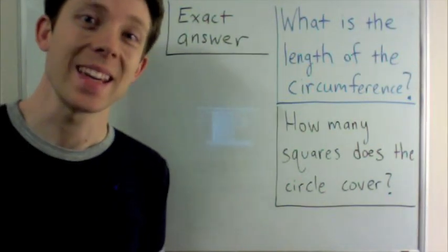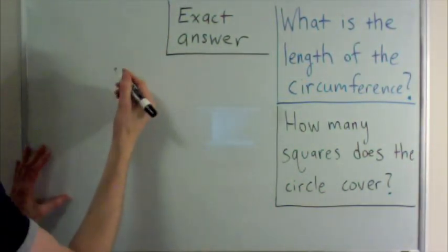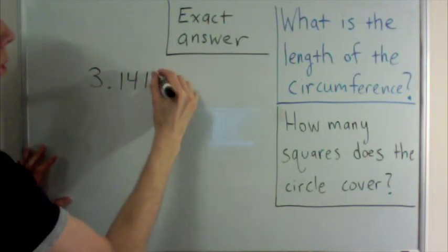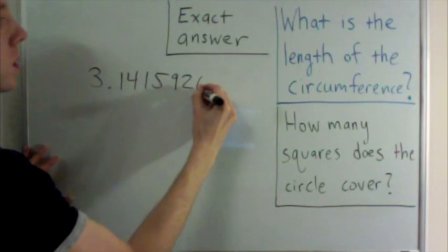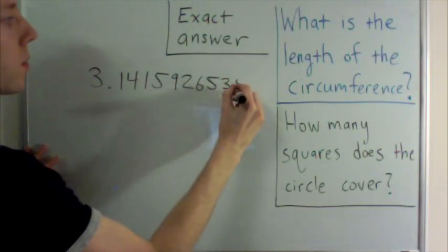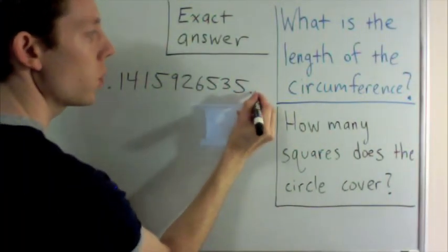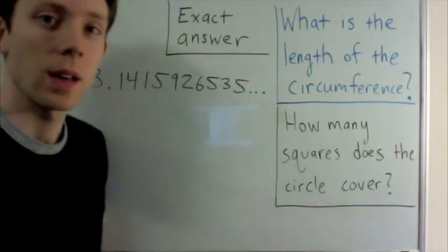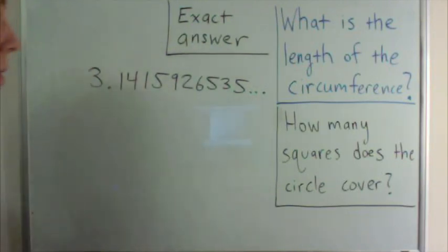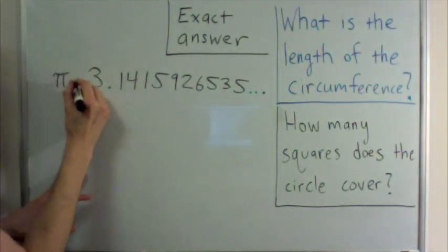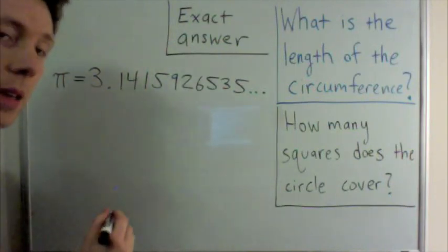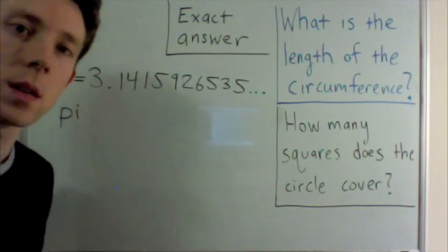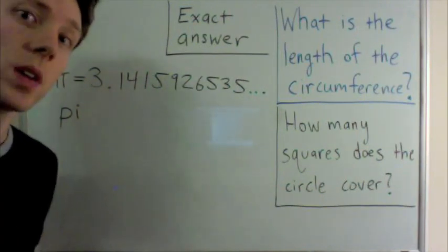It turns out that the exact answer to both of these questions is the same number, and that number is about 3.1415926535. And it turns out that if you want the exact answer, the decimal representation goes on forever, and it never repeats. So, an abbreviation for this number is PI. If you want to write it in English, you can write PI, and this letter is the Greek letter that we use as an abbreviation for that number.